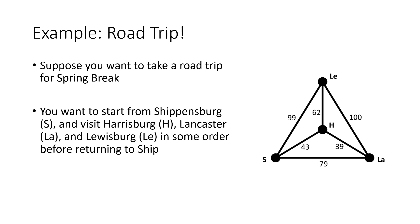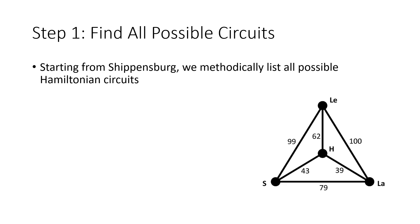Let's suppose that we want to take a road trip for spring break. We'll start at Shippensburg, and then we want to visit Harrisburg, Lancaster, and Lewisburg in some order before returning back to Shippensburg. The first step of our brute force method is to find all of the Hamiltonian circuits that fit this criteria. I like to indicate this with what we call a tree diagram.